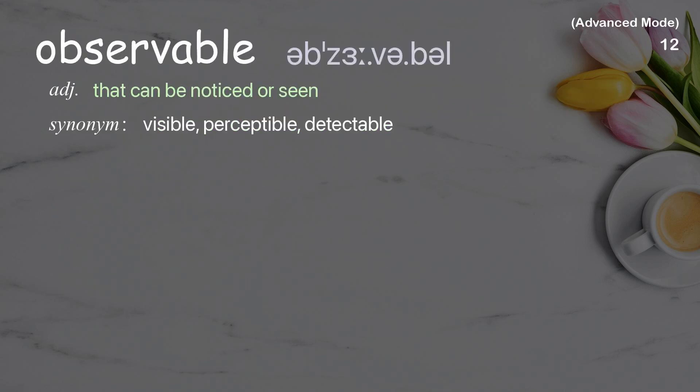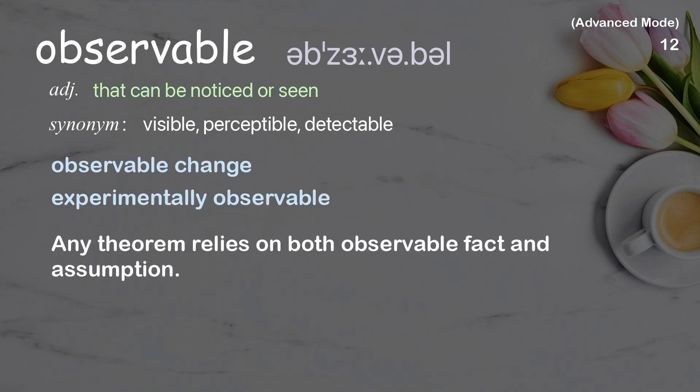Observable: that can be noticed or seen. Examples: observable change, experimentally observable. Any theorem relies on both observable fact and assumption.